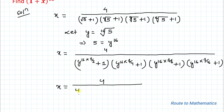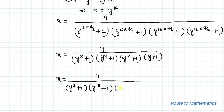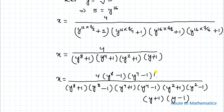To simplify further, we multiply the conjugate of each binomial in the denominator. So we multiply by (y^8 − 1)(y^4 − 1)(y^2 − 1)(y − 1) in both numerator and denominator. The numerator becomes 4 times (y^8 − 1)(y^4 − 1)(y^2 − 1)(y − 1).